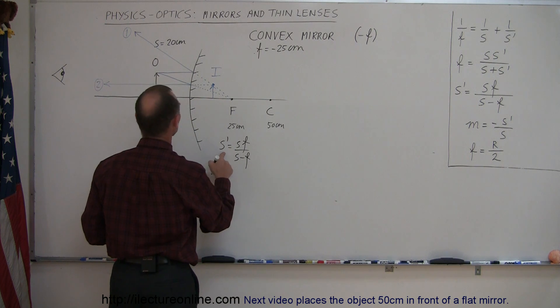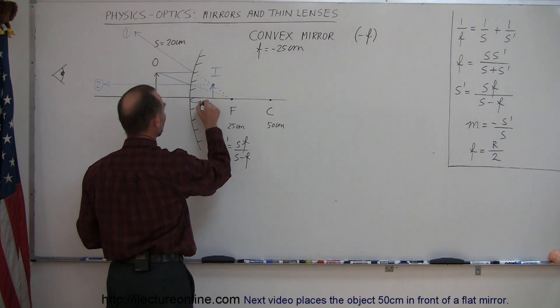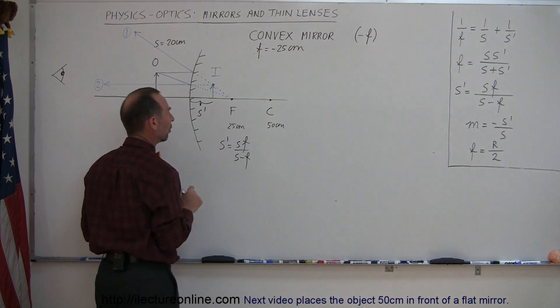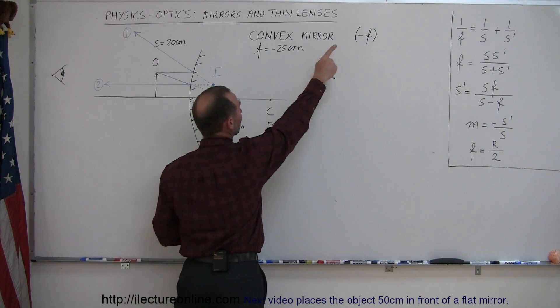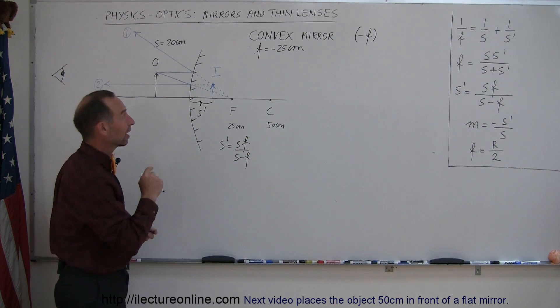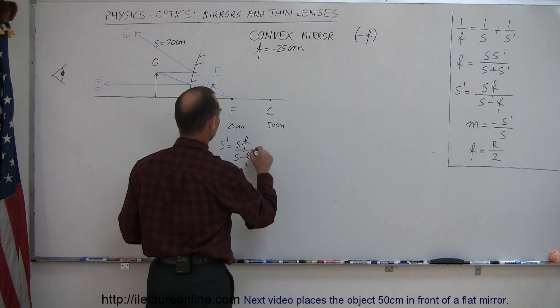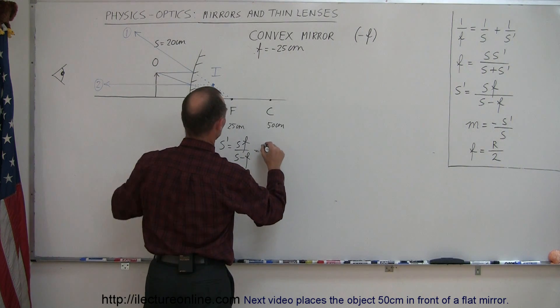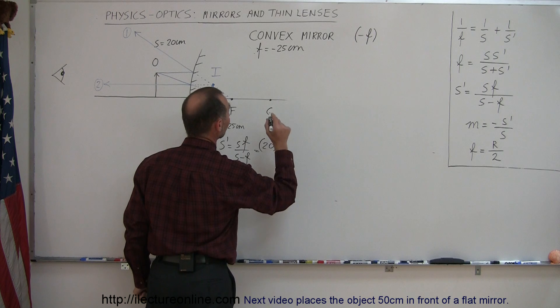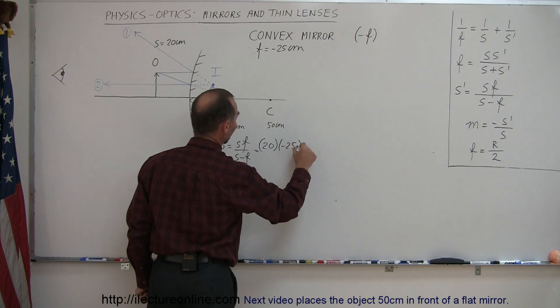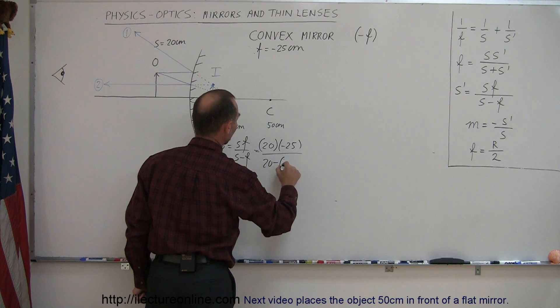S' is the distance to the image. That will be this distance right here. This will be S', what we're looking for. Of course remember that with a convex mirror the focal length is always negative. In this case we have a minus 25 centimeter mirror. So this will be S which is 20 times SF which is minus 25 divided by 20 minus and minus 25.